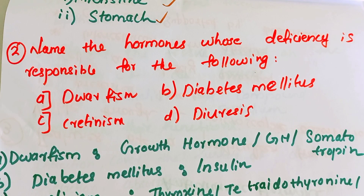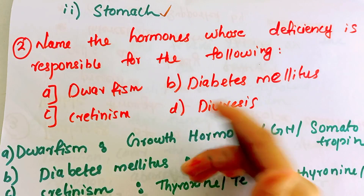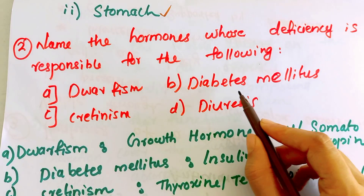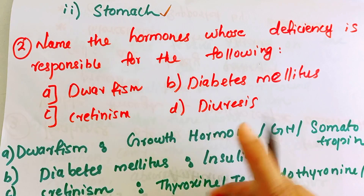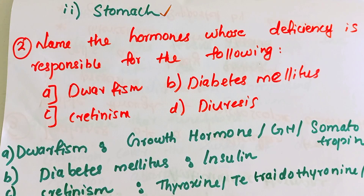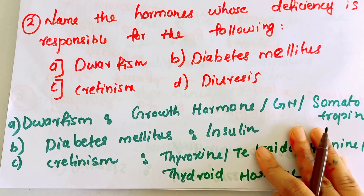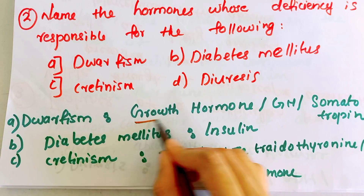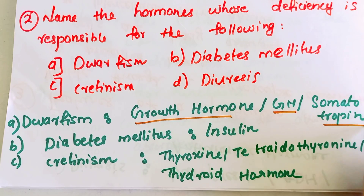Name the hormones whose deficiency is responsible for the following conditions: Dwarfism, Diabetes mellitus, Cretinism, and Diuresis. For Dwarfism, the deficient hormone is Growth Hormone (GH), also called Somatotropin.